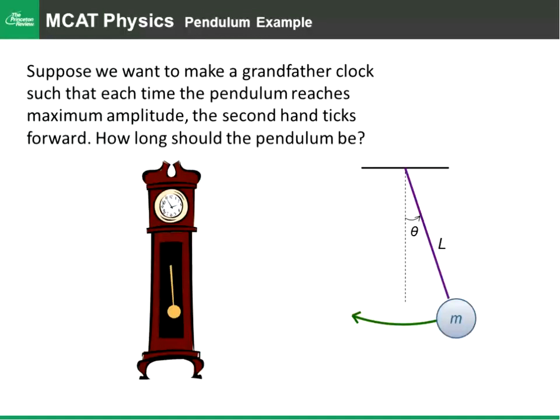It goes tick, tock, tick, tock. The period of oscillation is actually tick back to tick, or tock back to tock. And so that's two clicks. So that's two seconds. So we want a period for our grandfather clock of two seconds.